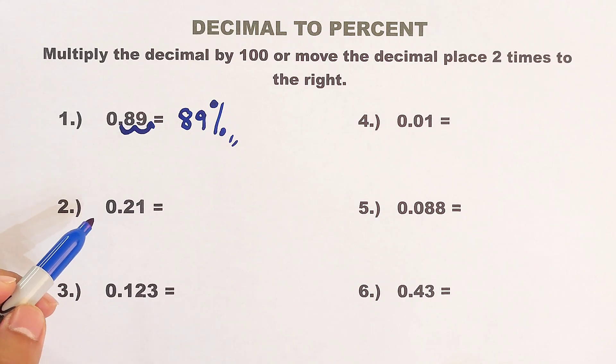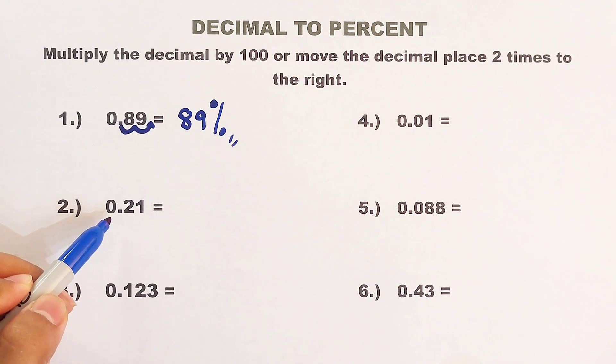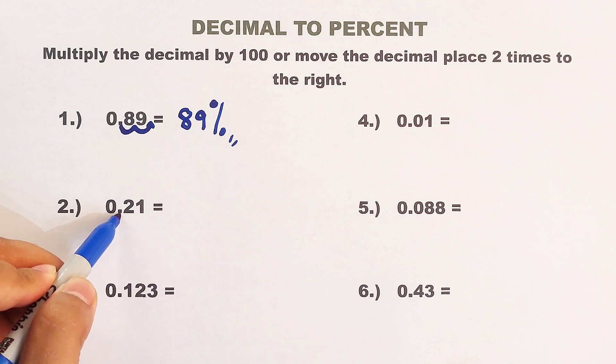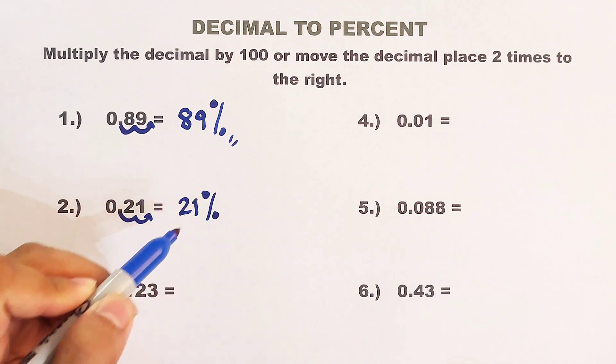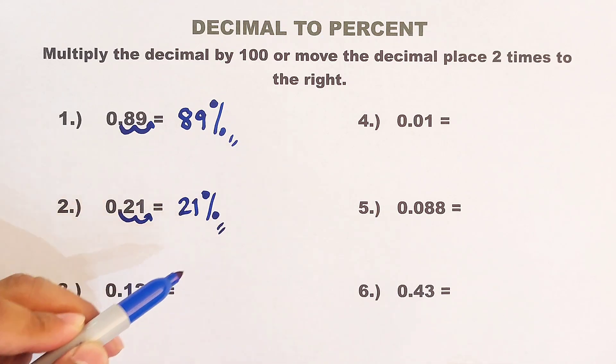Now let's move on with another example. We are given 0.21. Same thing or same process, 1 and 2. We have 21 here. So the answer is simply 21%. As simple as that.